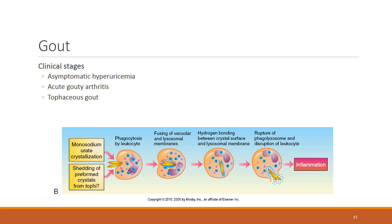Tophi can deposit in any type of connective tissue, such as ear cartilage or the metatarsophalangeal joint. Schematically, uric acid crystals undergo attempted phagocytosis by leukocytes, but phagocytosis is disrupted, and the resulting crystals cause ongoing inflammation.